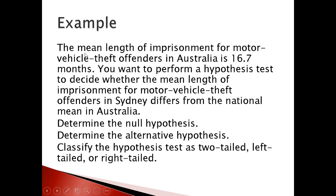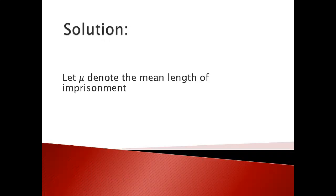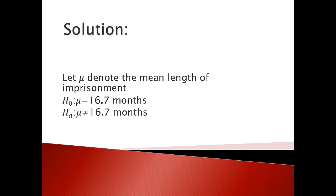We know the mean length of imprisonment in Australia is 16.7 months. We need to see whether the mean length of imprisonment differs from the national mean. Since we are dealing with 'difference,' this is a two-tail test. The null hypothesis is: H₀ such that μ = 16.7 months. For the alternative, since we are talking about 'different,' Hₐ is μ ≠ 16.7 months, and since we have the not-equals sign, it's a two-tail test.